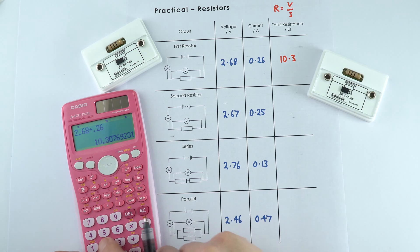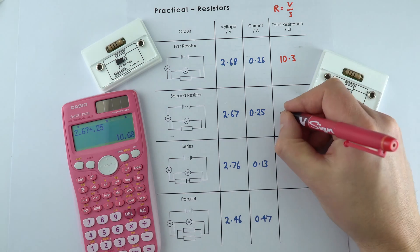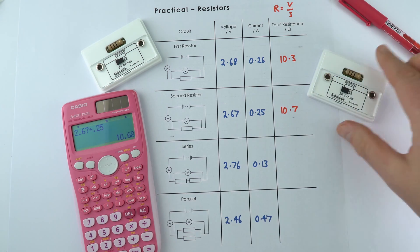And if we do the same for this resistor, it was 2.67 divided by 0.25 which was 10.7.